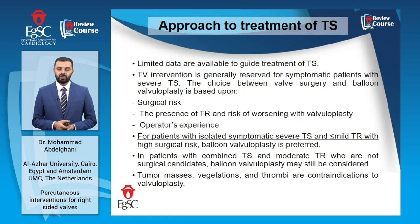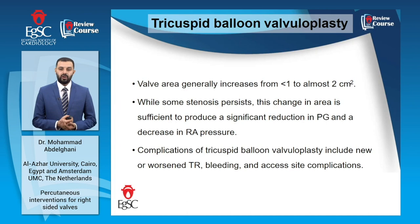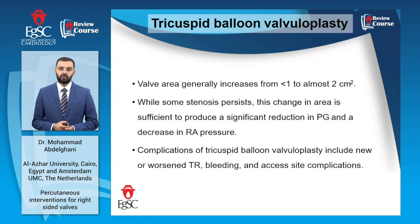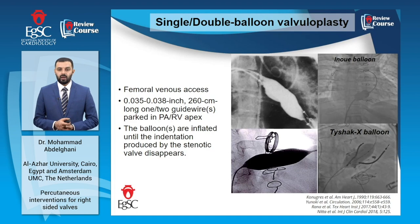Tumor masses, vegetations, and thrombi are absolute contraindications to balloon valvuloplasty. The procedure is expected to increase the tricuspid valve area from less than 1 to around 2 cm², and although this isn't sufficient to reach normal tricuspid valve area, this residual stenosis doesn't preclude hemodynamic benefit. Most patients report significant improvement of symptoms and reduction of diuretic doses. Complications include new or worsening TR, bleeding, and access site complications. Many balloons can be used in a single or double balloon technique, and the femoral venous axis is the typical route.